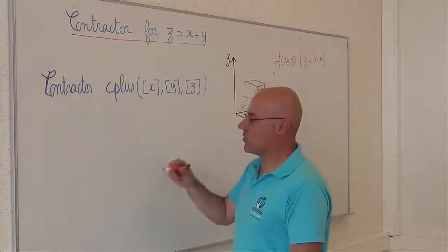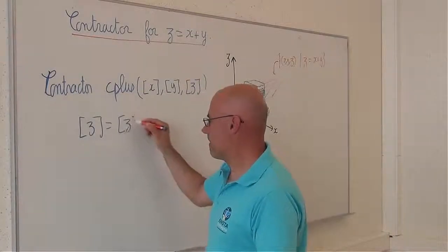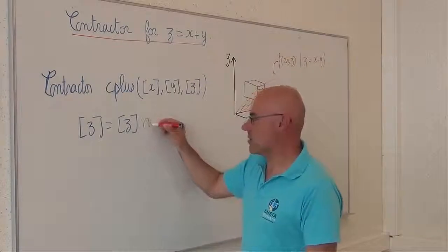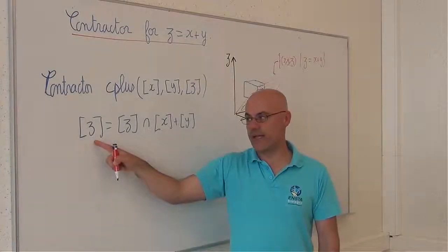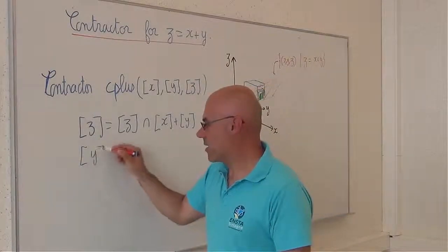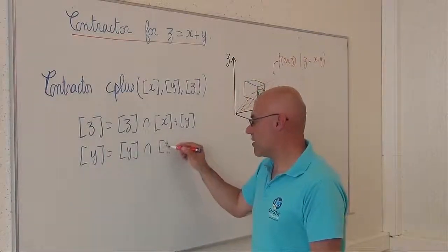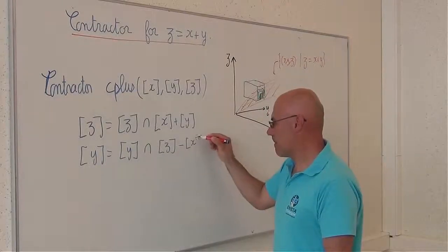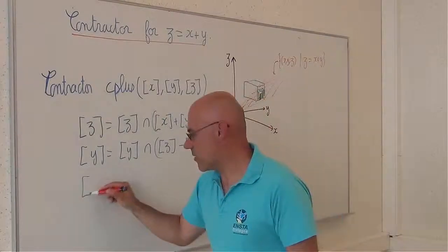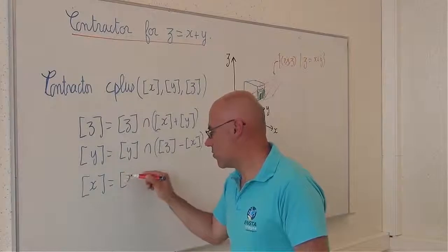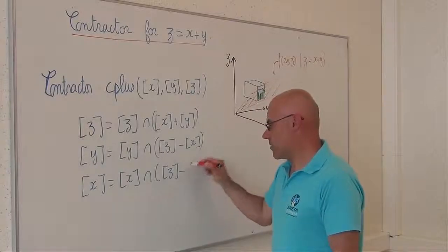The contractor corresponds to the following operation: v equal to z intersection x plus y, this will contract z; y which corresponds to the intersection between y but also v minus x; and the last one x equal to x intersected with z minus y.